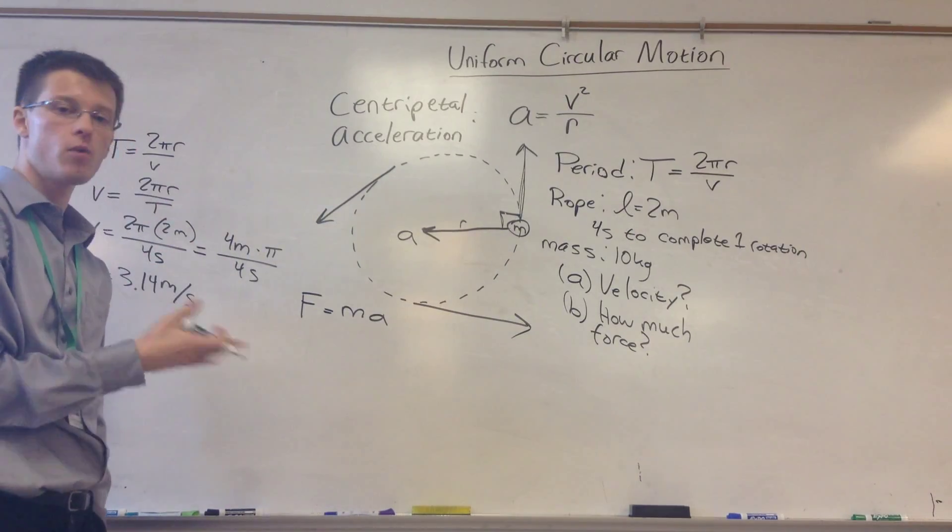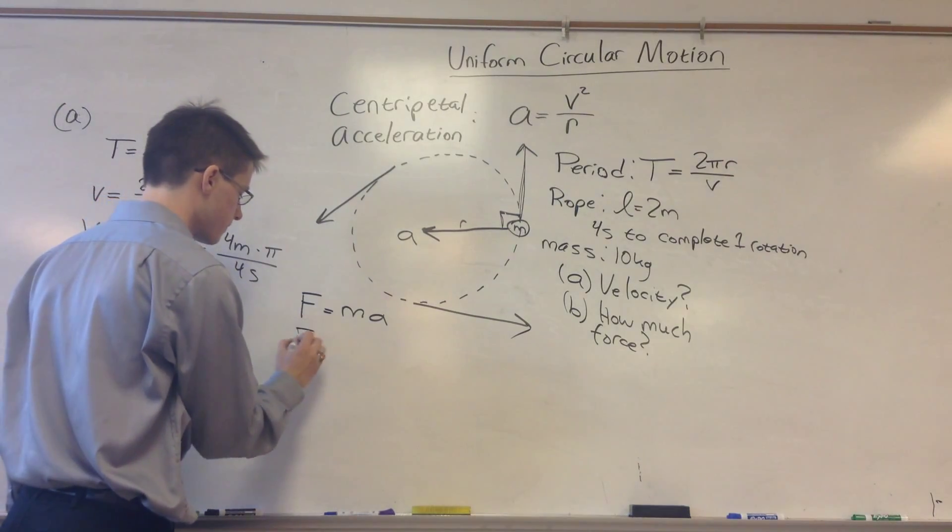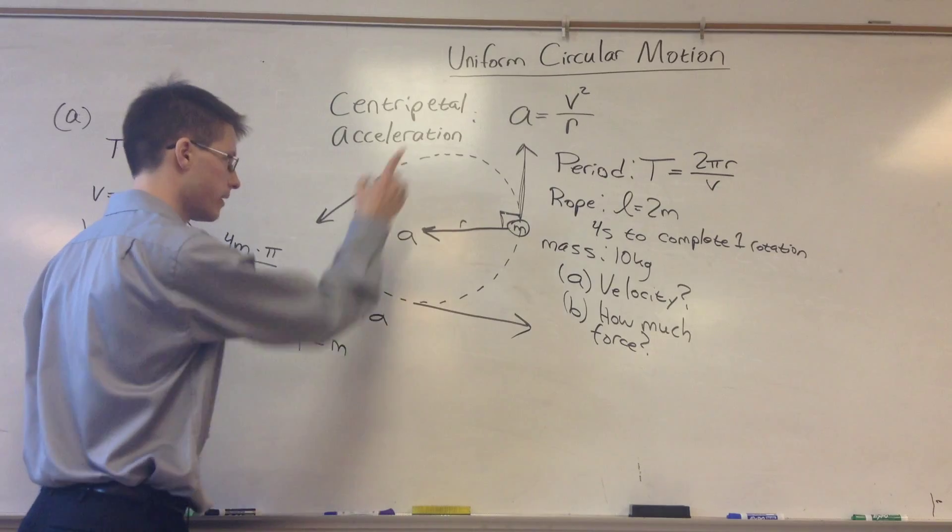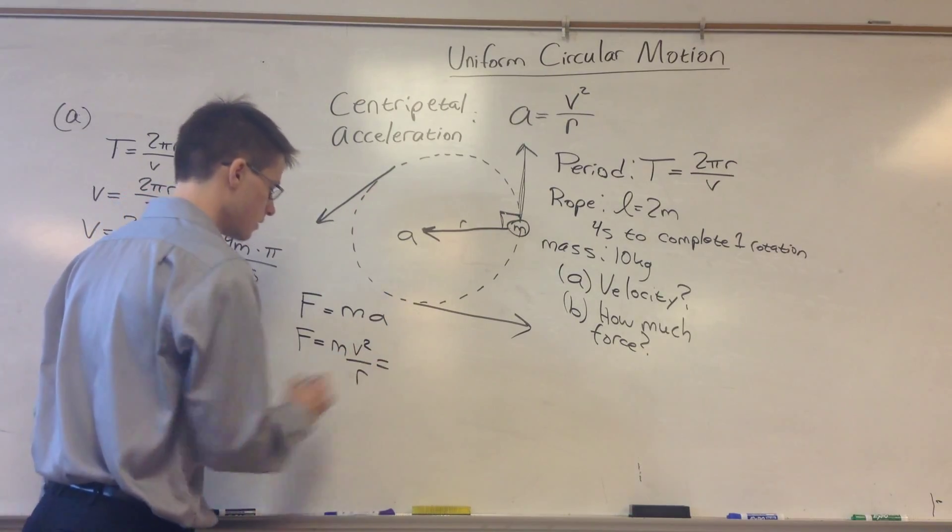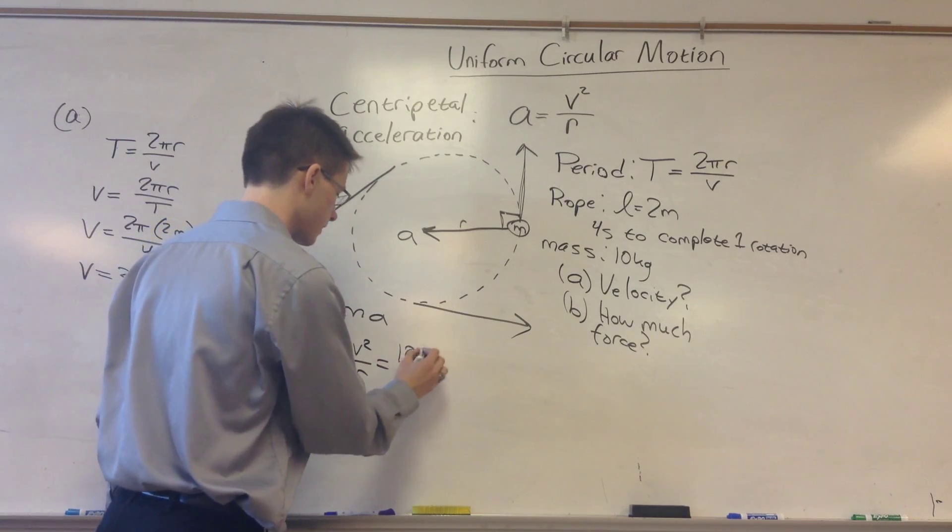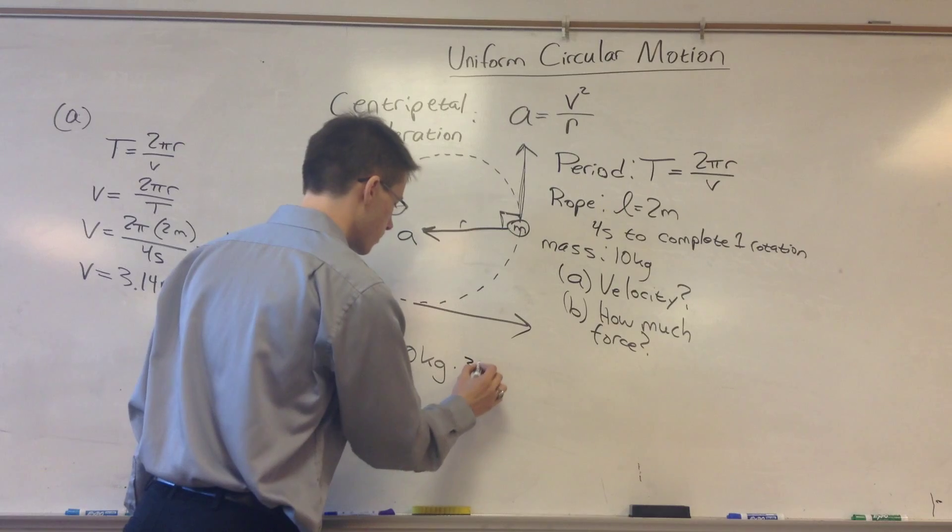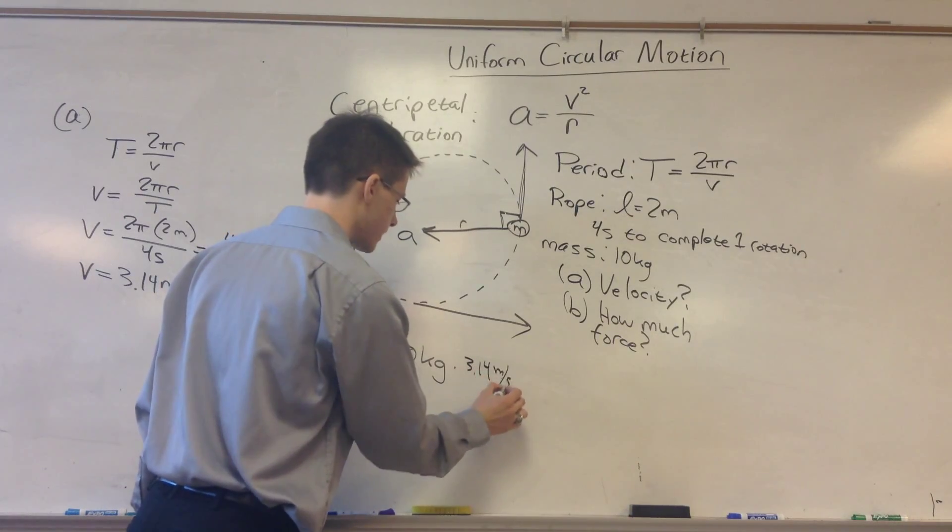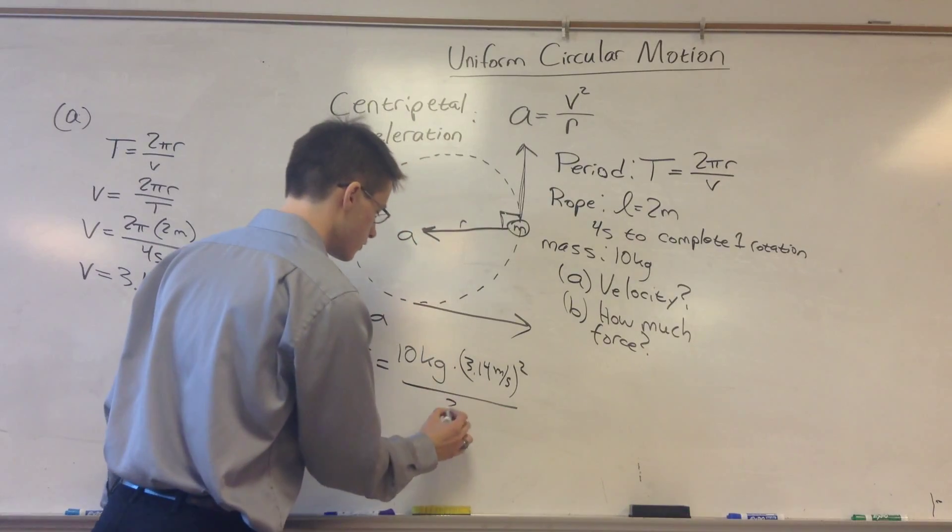We can find what this acceleration is because we now have the velocity and we have the radius. So if we want a force, all we have to do is multiply by the mass. So the force necessary is going to be M times the centripetal acceleration, which is V squared over R. So plugging in our numbers, we get 10 kilograms times our velocity squared, 3.14 meters per second squared, divided by the radius, which is 2 meters.